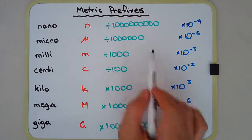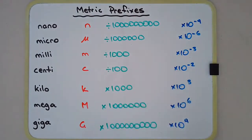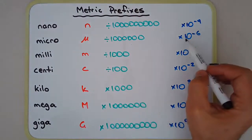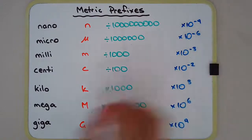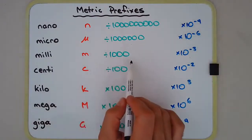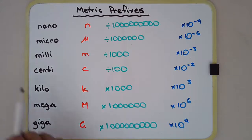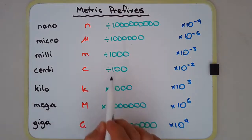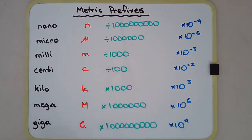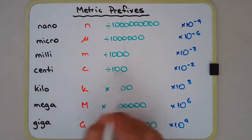Micro means divide by a million, or a millionth, which is the same as multiplying by 10 to the negative 6. Milli means divide by a thousand — a thousandth. For example, there are a thousand millimeters in a meter. Centi means a hundredth — there are a hundred centimeters in a meter.